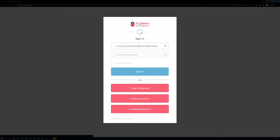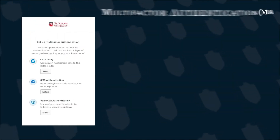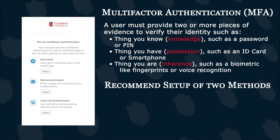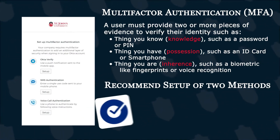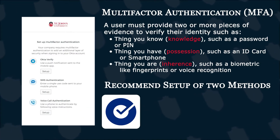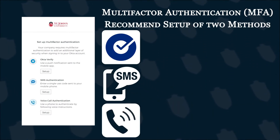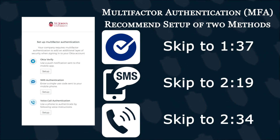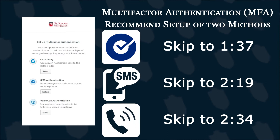You'll be prompted by Okta to set up at least one way to verify your identity. This is known as multi-factor authentication. We recommend you set up at least two methods. The university supports authentication via the Okta Verify app, SMS, or voice call. We will go through setup for each authentication type. If you wish to skip to a specific authentication type, you can do so using the times listed on screen.